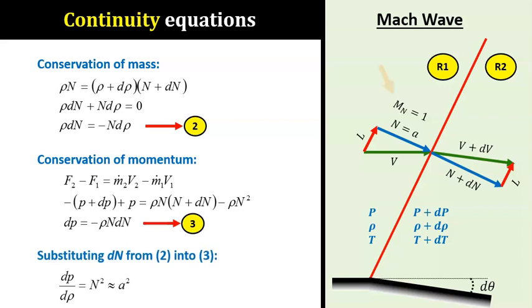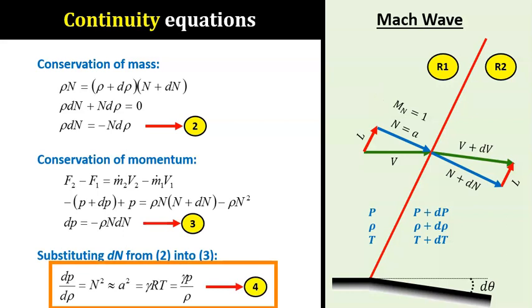Again, note that the incoming flow across a Mach wave has a Mach number of 1, which means that its velocity is equal to the speed of sound, i.e. n equals to a. This will get us to equation 4. We will use this equation later.